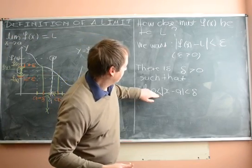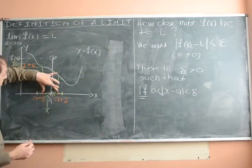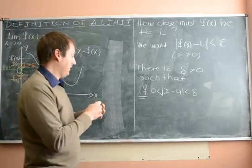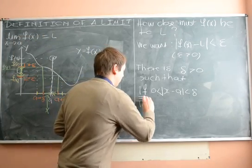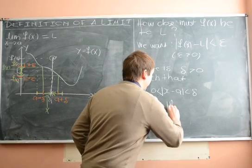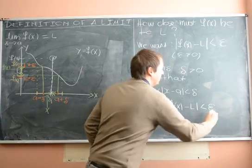So if absolute value of x minus a is between zero and delta, so we're in this little interval, then f(x) must be in this little interval. So we have then absolute value of f(x) minus L is less than epsilon.